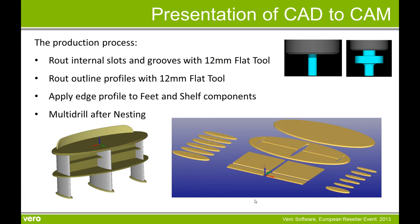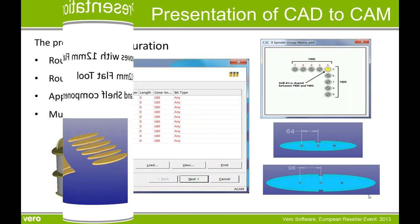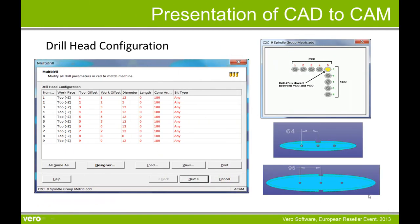The production process we wish to follow is to route all the internal slots and grooves with a 12mm flat tool, and also route all outline profiles with the same 12mm tool. Then apply the edge profile to the feet and shelf components visible in the top right-hand corner, and then multi-drill after the sheets have been nested. The sectional leg components have holes running through the middle at 64 and 96 centres, so we are able to configure the multi-drill to utilise gang drilling.